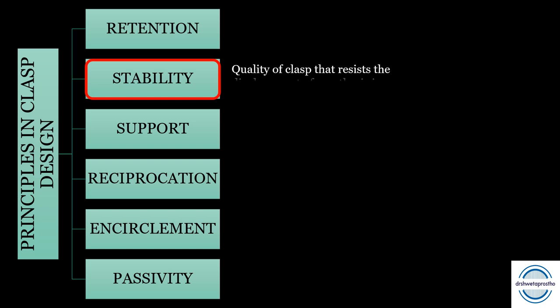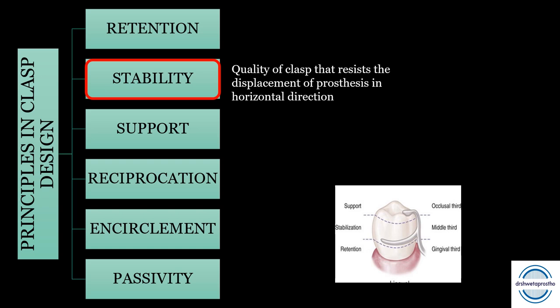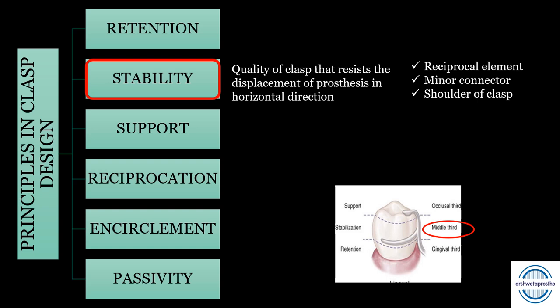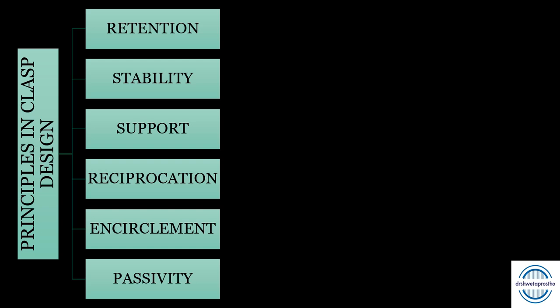The second factor is stability — the quality of the clasp that resists displacement of the prosthesis in the horizontal direction. When forces are horizontal, the vertical components help in stability. Components in the middle third help in stabilization: the reciprocal element, minor connector, and shoulder of the clasp. Support is the quality of the clasp that resists displacement of the prosthesis in the apical direction (towards the tissue). The component in the occlusal third — the occlusal rest — provides support.